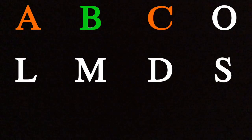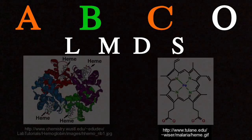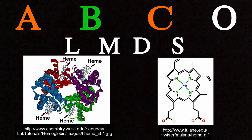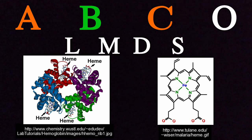Other heme groups are labeled L, M, D, and S, which all are derivatives from the initial four heme groups mentioned earlier. Furthermore, each heme group contains the central iron molecule to which the oxygen bonds. Hence, each hemoglobin molecule is capable of carrying four oxygen molecules.